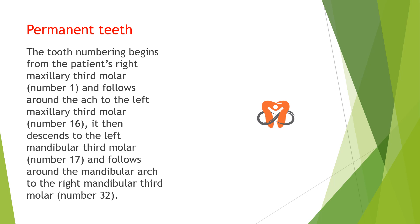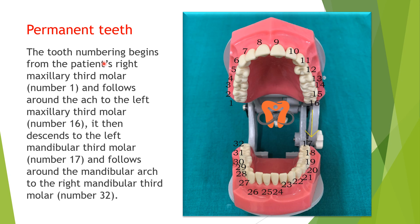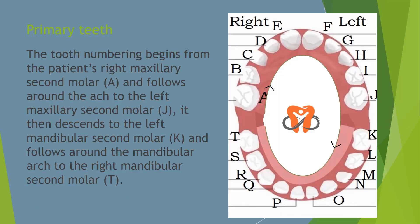The permanent tooth numbering begins from the patient's right maxillary third molar, which is number 1. It proceeds onwards through the entire maxillary arch to the opposite side third molar, which is number 16. Then we move downwards to the left mandibular third molar, which is number 17, and proceed to the right mandibular third molar, which is number 32. So each tooth has its own unique number — number 8 is the right maxillary central incisor, number 13 is the left maxillary second premolar, and number 23 is the left mandibular lateral incisor.